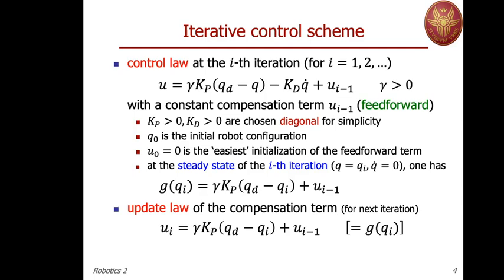Because of the previous equation, the update is made by a torque term which is equivalent to the gravity at the previously reached steady state. We don't know a priori what this gravity is, but we know its numerical value because it is exactly the control effort we are applying in the known reached configuration QI. So from there, we can do the update law — in the implementation we will use the expression on the left-hand side, but for analysis this will be equivalent to G(QI).